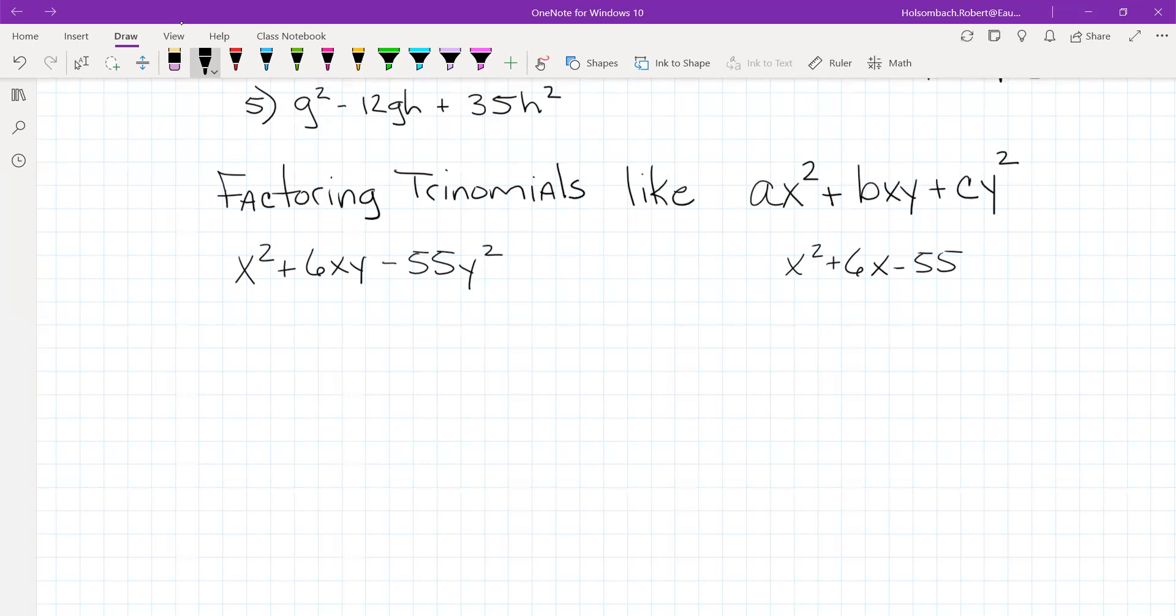And all the rules are going to be the same, except if we have a y in the middle and y squared at the end, in our binomials we've got an x squared, an x as a term and an x as a term. We're looking for factors of 55 that add up to 6.